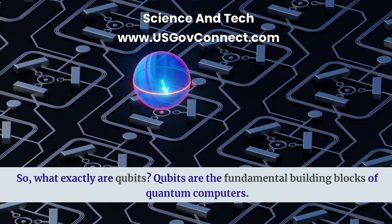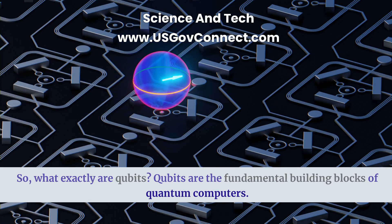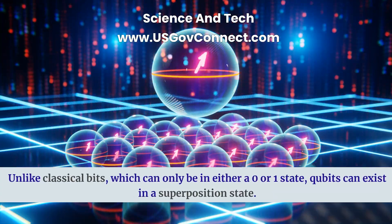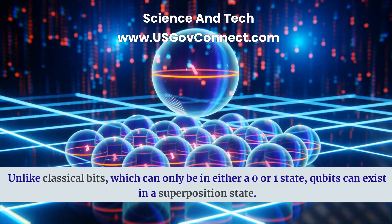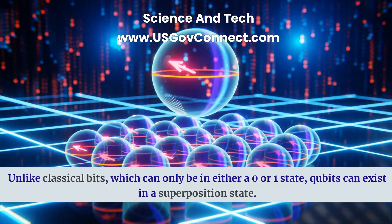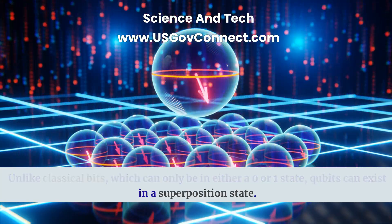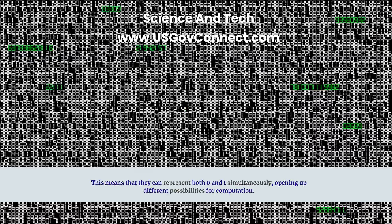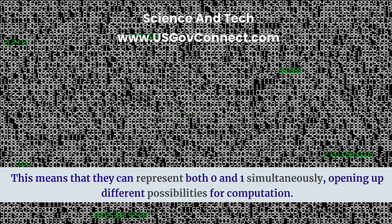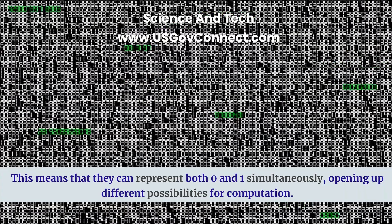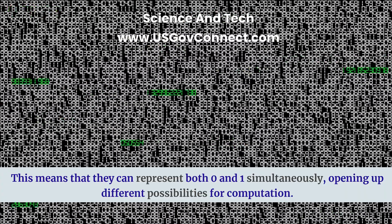So what exactly are qubits? Qubits are the fundamental building blocks of quantum computers. Unlike classical bits, which can only be in either a zero or one state, qubits can exist in a superposition state. This means that they can represent both zero and one simultaneously, opening up different possibilities for computation.